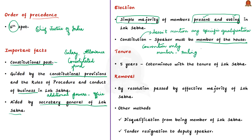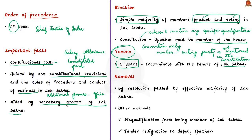By convention, people with a good understanding of the Constitution and conventions of Parliament are often selected as Speaker — but this is just convention, not mentioned in the Constitution. Also by convention, a member belonging to the ruling party is elected as Speaker, though the Constitution does not mandate this, and there have been instances where non-ruling party members were elected. The Speaker's term is similar to the term of the Lok Sabha — five years.